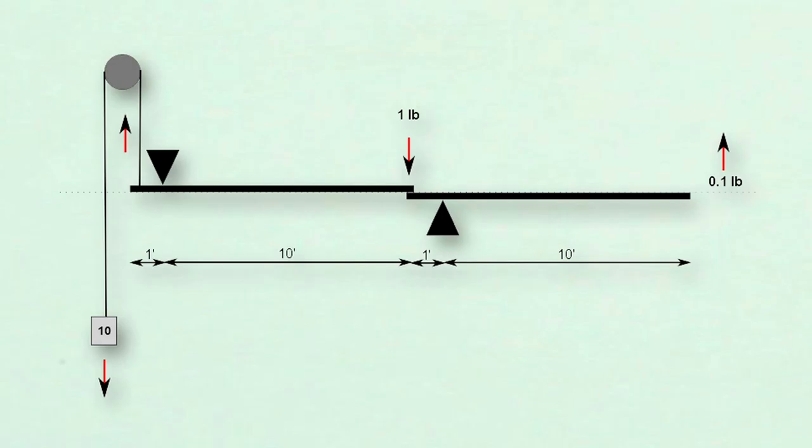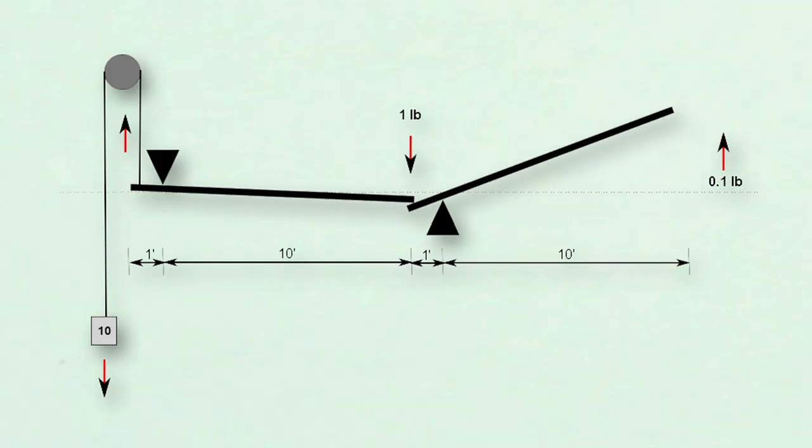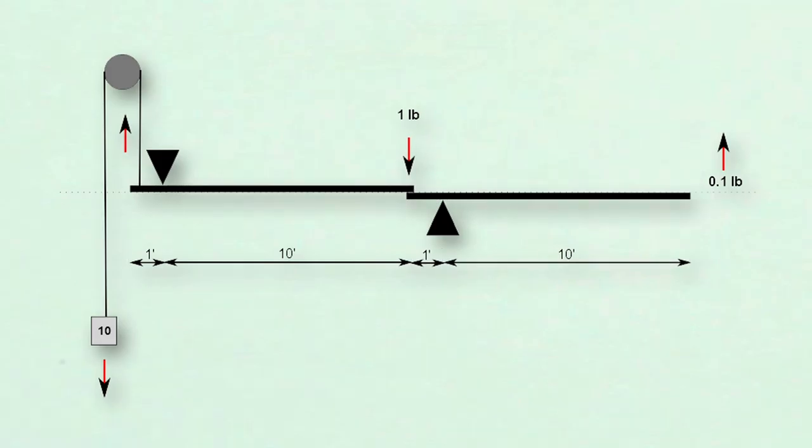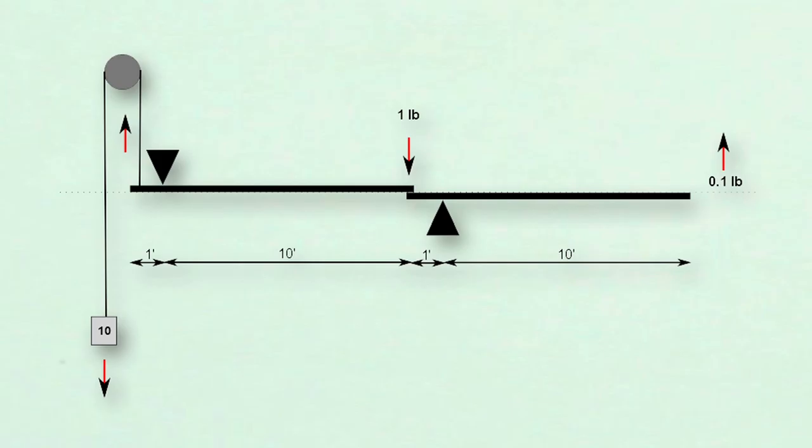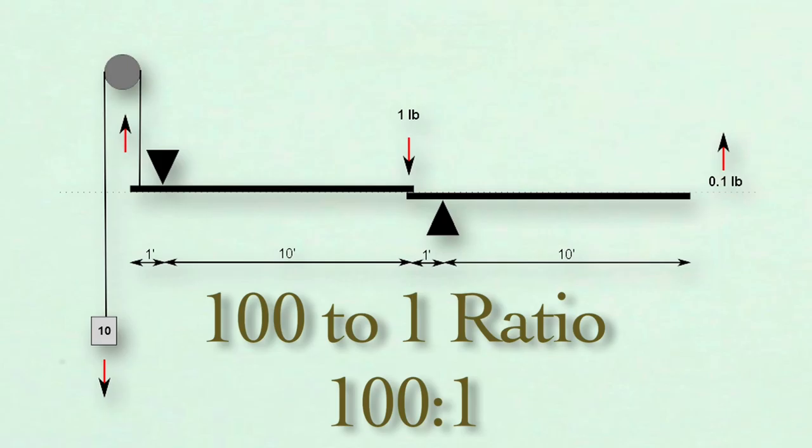And 10 feet away on the second lever, this 1 pound of force is offset by 1 tenth of a pound. We've also again multiplied the distance moved by 10, which gives us an end-to-end movement of 100 to 1.